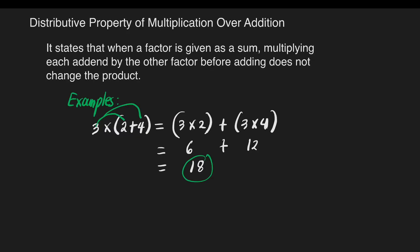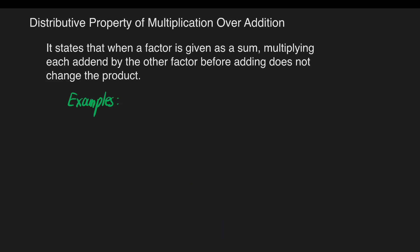Or, we can do it this way: 3 times the quantity of 2 plus 4. We can just add 2 plus 4, which gives us 6. Then multiply: 3 times 6 is equal to 18. So the answer is 18. Another example: